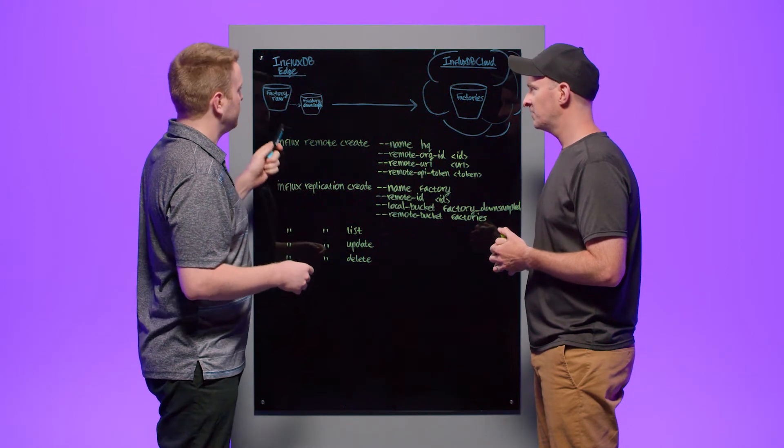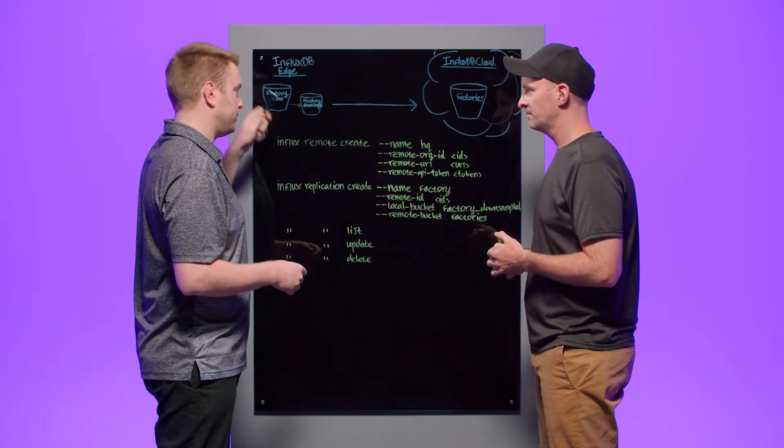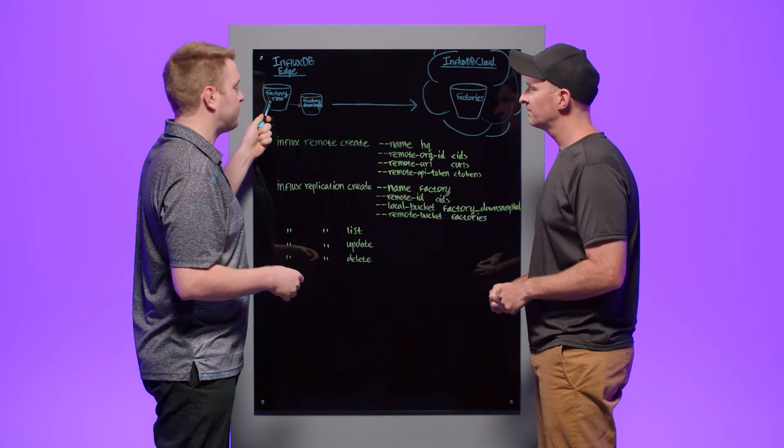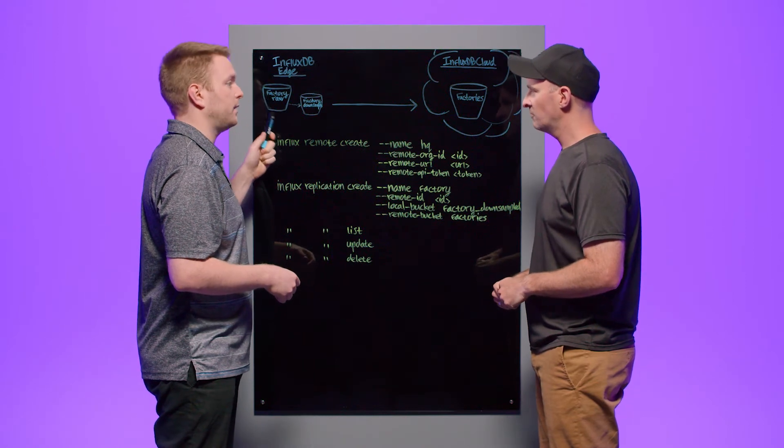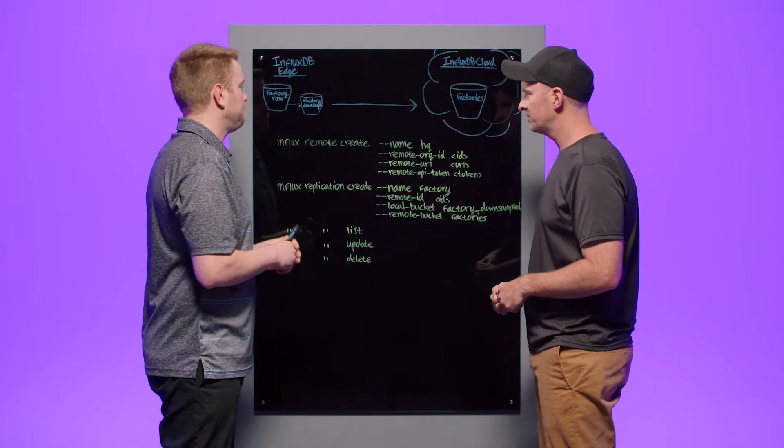So, let's take an example. Let's say that this InfluxDB open source node is at some factory. We have a high fidelity raw data set stored there that local operators can run dashboards off of, do alerts, whatever, right?